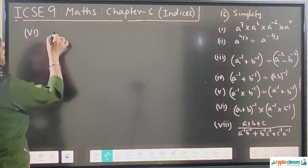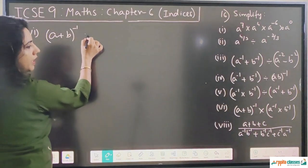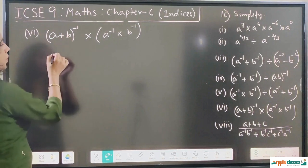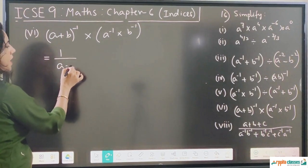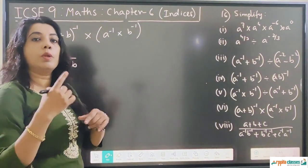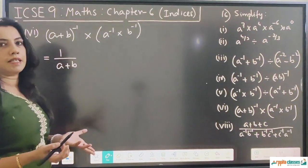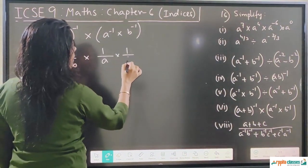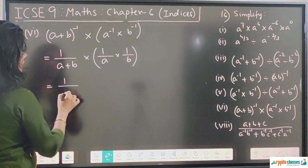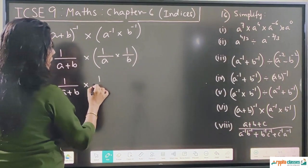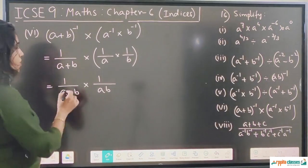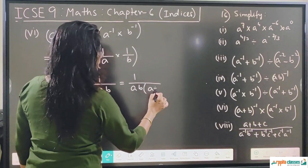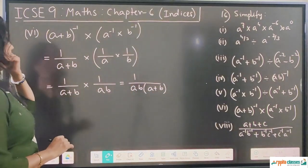The sixth question is (a + b)^(-1) · a^(-1) · b^(-1). Making exponents positive: 1/(a+b) · 1/a · 1/b = 1/(a+b) · 1/ab. Nothing cancels here, so we multiply numerator by numerator and denominator by denominator, giving 1/(ab(a + b)). That is the answer for the sixth question.